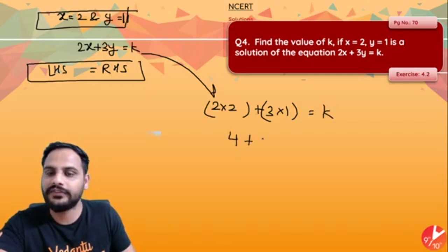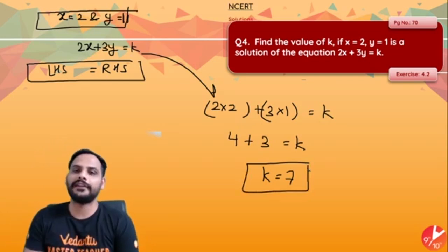So 2 into 2 plus 3 into 1 is equal to k. 2 into 2 is 4 plus 3 into 1 is 3 is equal to k. So k is equal to 7. As simple as that.